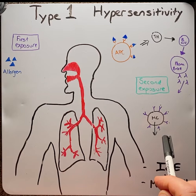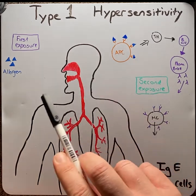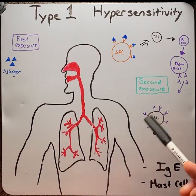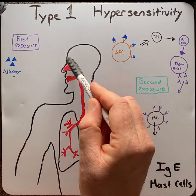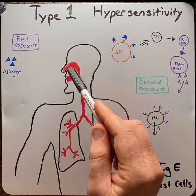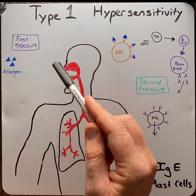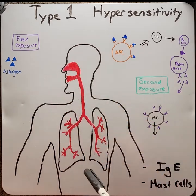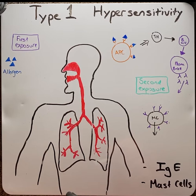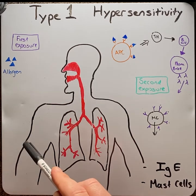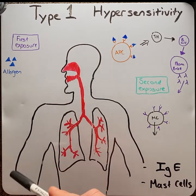Depending on where the allergy occurs will determine the outcome. If it's in the upper respiratory tract, it causes hay fever, leading to sneezing, watery eyes, and coughing. If it's in the gastrointestinal tract, it can lead to nausea, vomiting, and diarrhea. If it's on the skin, it can lead to rashes and dermatitis.